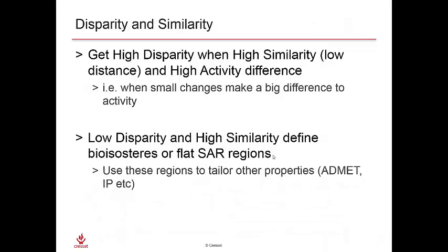To recap: we get high disparity when molecules are very similar yet have high activity differences — this is an activity cliff. On the other hand, molecules with low disparity yet high similarity define bioisosteres or flat regions on the SAR landscape. These areas can be used to tweak IP, ADMET properties, and so on.